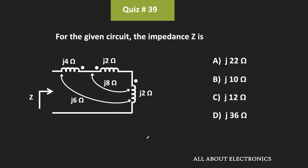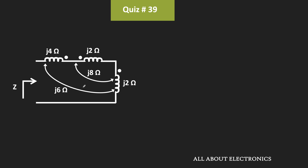Hey friends, welcome to the YouTube channel all about electronics. In this question we have been given this mutually coupled circuit, and we have been asked to find the equivalent impedance seen from this side. Here, let's say the coils are L1, L2, and L3 respectively, and their impedances are Z1, Z2, and Z3 respectively. Z1 will be equal to j4 ohm, while Z2 and Z3 will be equal to j2 ohm.